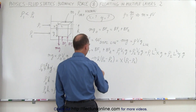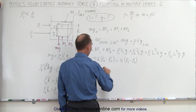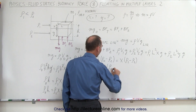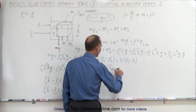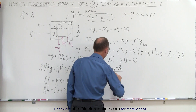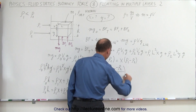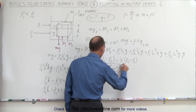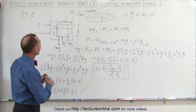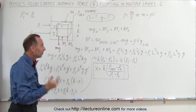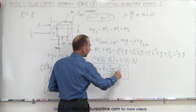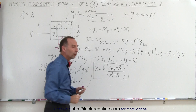Solving this for x, we get: x equals h times the ratio of (density of the object minus density 2) divided by (density 1 minus density 2). And there we have an expression that tells us how much of the object is in layer 1. It depends upon the height of the object, the density of the object, the density of layer 2, and the density of layer 1.